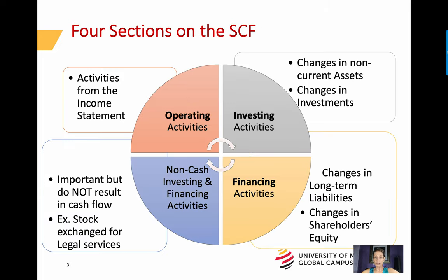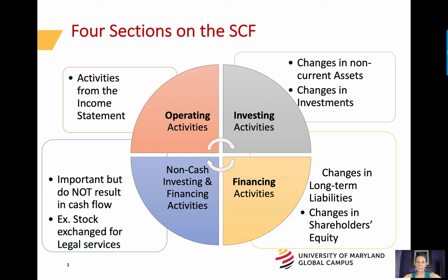There are three main sections of the Statement of Cash Flows and a fourth section for non-cash flow activities that are important enough to be on the face of the Statement of Cash Flows, even though these transactions do not result in cash flow. The three main sections are Cash Flows from Operating Activities, which arise from activities on the Income Statement, Cash Flows from Investing Activities, which arise from increases and decreases in non-current assets and also investments, and Financing Activities, which arise from increases and decreases in long-term liabilities and stock equity.